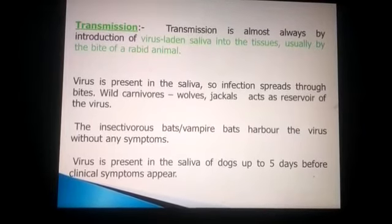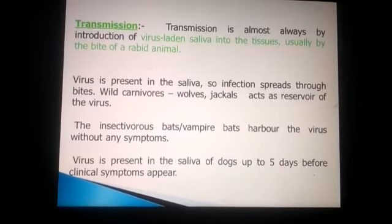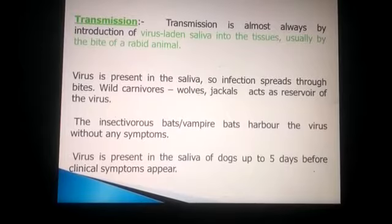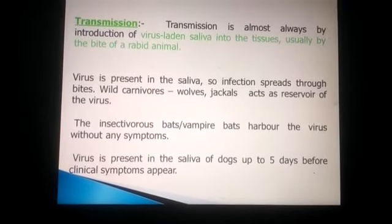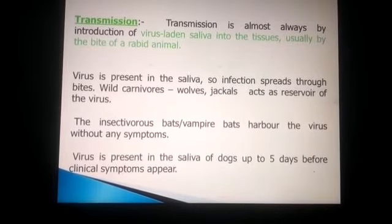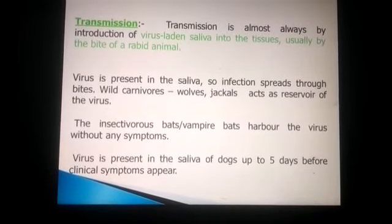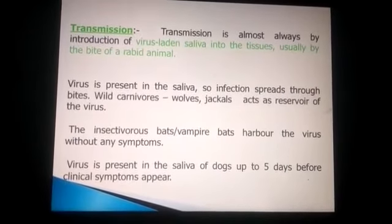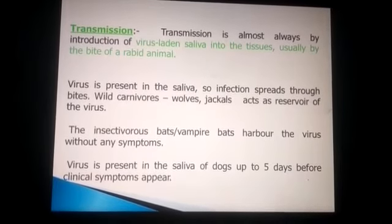Transmission is almost always by the introduction of the virus-laden saliva into tissue, usually by the bite of a rabid animal. The virus is present in saliva, so infection spreads through bites. Wild carnivores like wolves and jackals act as reservoirs. Insectivorous and vampire bats harbor the virus without symptoms. Importantly, the virus is present in a dog's saliva up to five days before clinical symptoms appear.